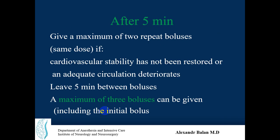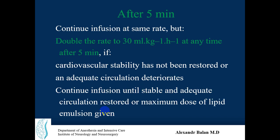After five minutes, give a maximum of two repeat boluses, leaving five minutes between each bolus with reassessment, for a maximum of three boluses total. Continue infusion at the same rate until circulation is restored. If cardiovascular stability has not been restored, you can double the rate to 30 milliliters per kilogram per hour.